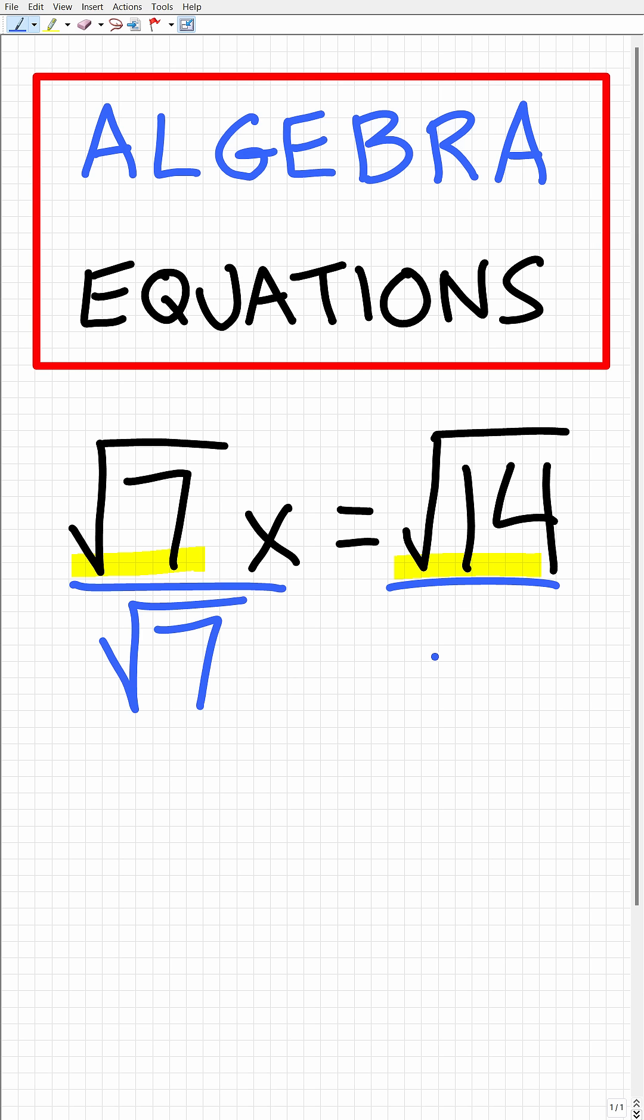Okay, so that's what we're going to do here. We're going to divide both sides of the equation by the square root of 7. So the square root of 7 divided by the square root of 7 is 1. So on the left hand side we have 1x or x and then on the right hand side of the equation we have the square root of 14 over the square root of 7.